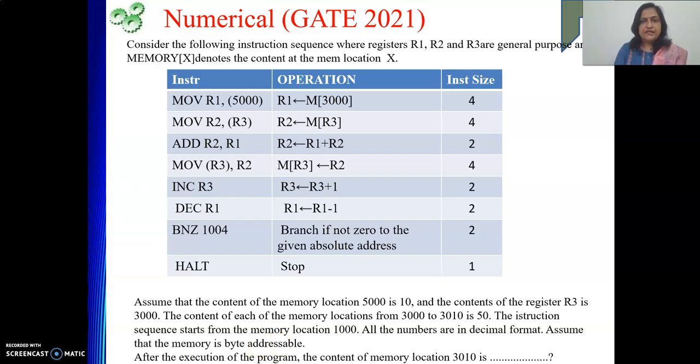So see the question is the data are given like this: R1, R2, R3 are my general purpose registers and memory X means content of memory location X. This is the address and whatever is the content that we will mean through this notation. So they have given us this set of data. These instructions are given and what is the meaning of each operation is given and what is the size of each instruction is given. So there must be some use of this size we will see.